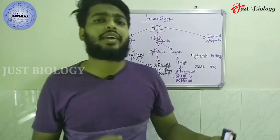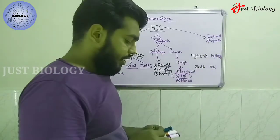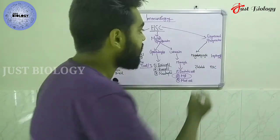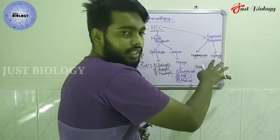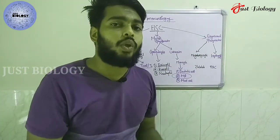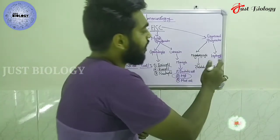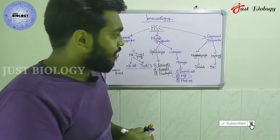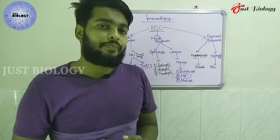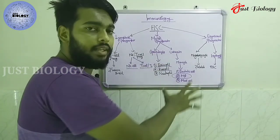The last kind of progenitor cell is called the erythroid progenitor — 'erythro' means something related to blood. The erythroid progenitor will differentiate into two types: megakaryocyte and erythroblast. The megakaryocyte will differentiate into platelets, while the erythroblast will differentiate into red blood cells — 'erythro' meaning blood-related, 'blast' meaning cell. This completes the classification and generation of different kinds of immune cells inside the human body.